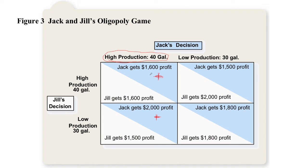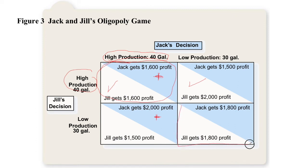From Jill's perspective: if Jack produces 40 gallons, she could produce 40 and get $1,600, or 30 gallons and get $1,500 — her best play is to produce 40. If Jack produces 30, she could produce 40 and get $2,000, or 30 gallons and get $1,800 — her best play is again to produce 40. Her dominant strategy is to produce 40 gallons. Regardless of what the other player does, they're both better off producing 40 gallons. If they could cooperate, they could actually split more money, but there's not really an incentive for them to cooperate.